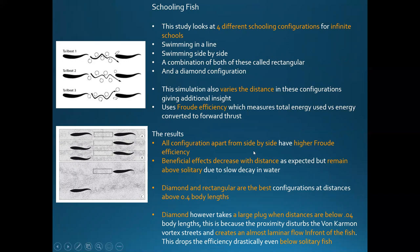All configurations apart from side by side had higher Froude efficiency than a solitary fish. The beneficial effects decrease with distance as vortices decay in water, but still remain higher than a solitary fish due to slow decay. Diamond and rectangular configurations were the best at distances above 0.4 body lengths, because the fish behind can capture vortices and use them to kick off higher-strength vortices, giving more forward force so the fish has to move its tail less.